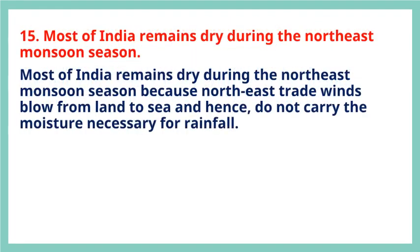Question 15: Most of India remains dry during the northeast monsoon season. Most of India remains dry during the northeast monsoon season because the northeast trade winds blow from land to sea and hence do not carry the moisture necessary for rainfall.